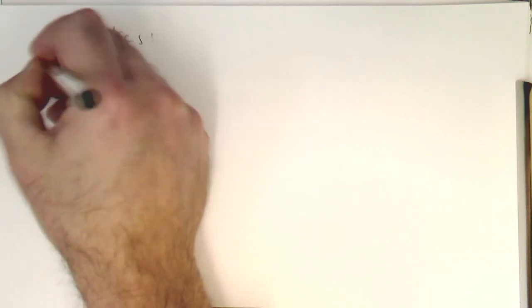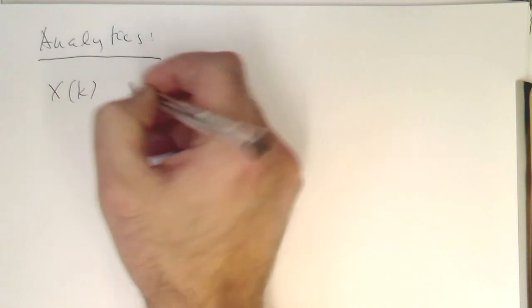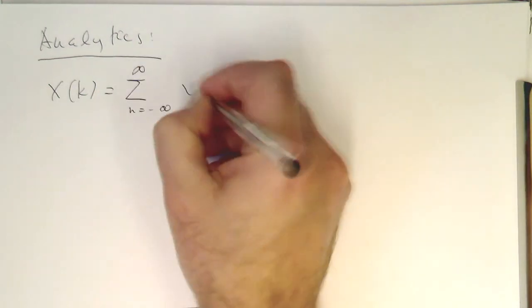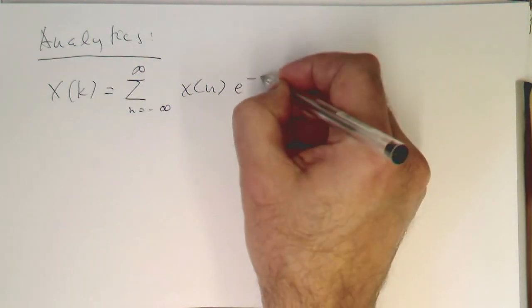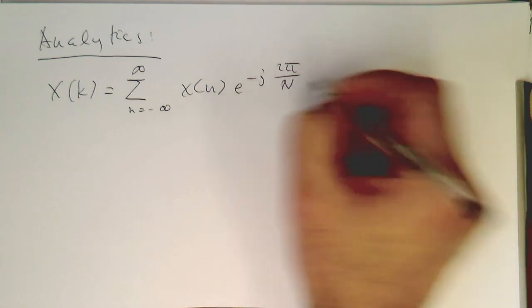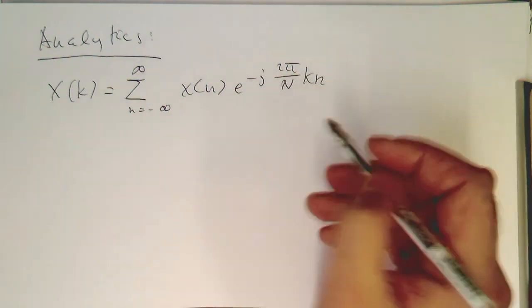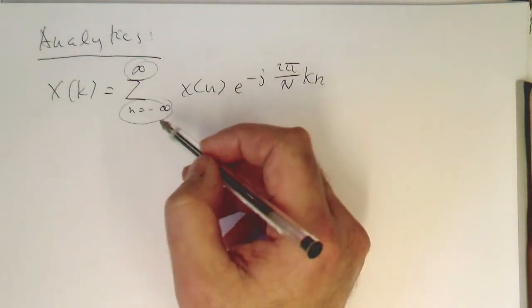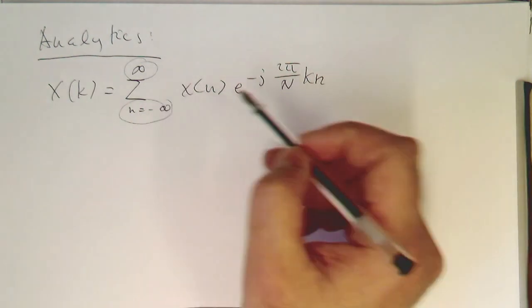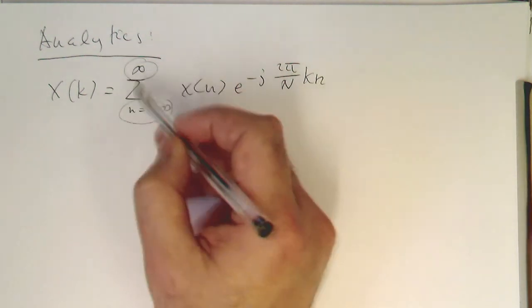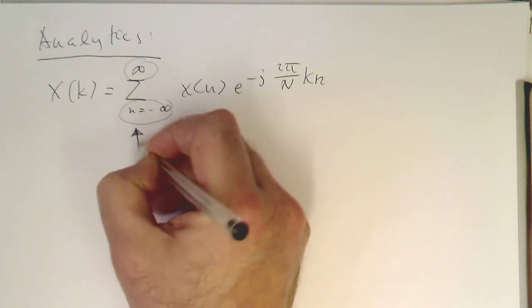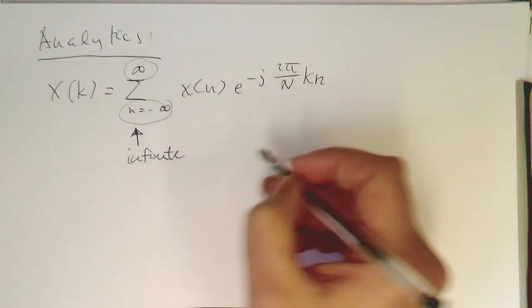Let's write down our discrete Fourier transform again. That's a sum from n equals minus infinity to plus infinity of x of n times e to the minus j 2 pi over N times k times n. This is not exactly our DFT because the boundary runs from minus infinity to plus infinity — in the proper DFT it would be from 0 to N minus 1. But we want to check the effect on an infinite time series, so we use the infinite sum.